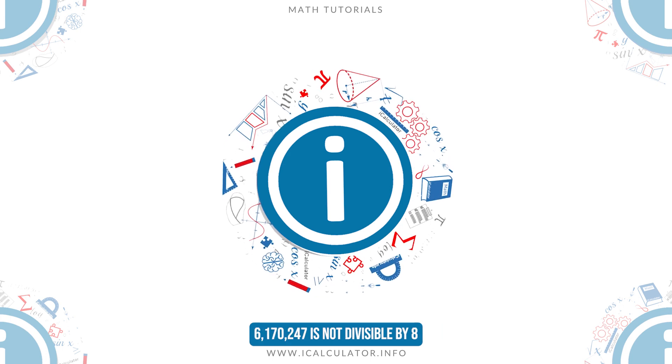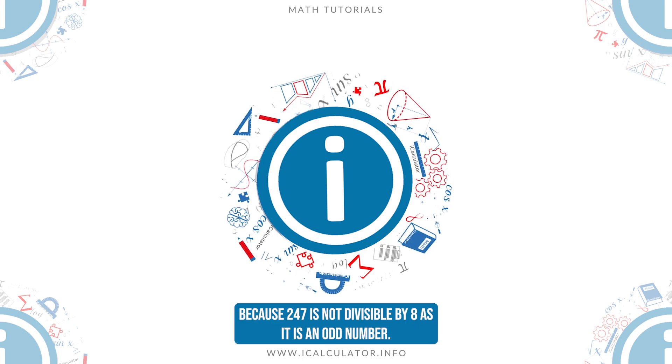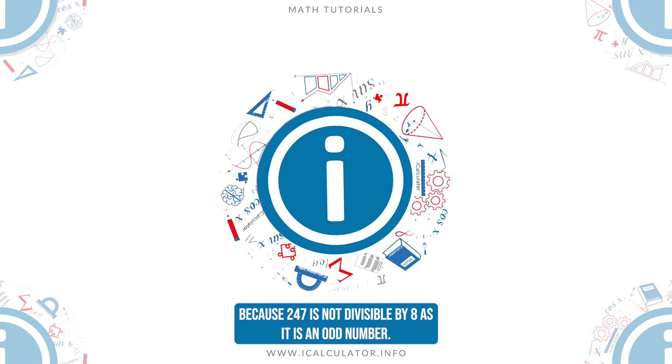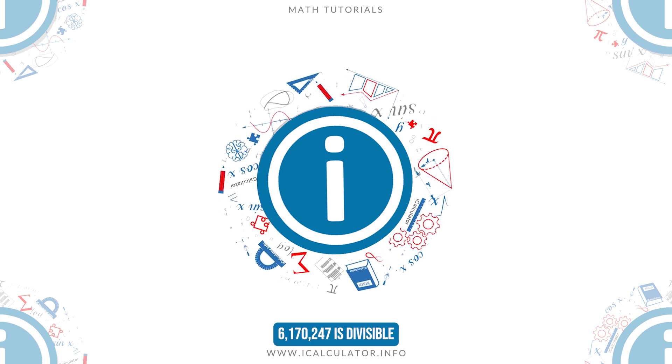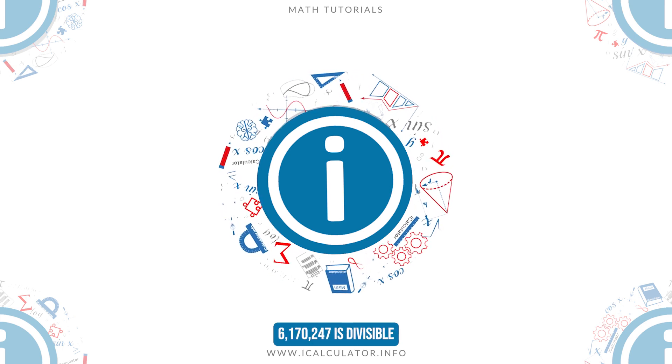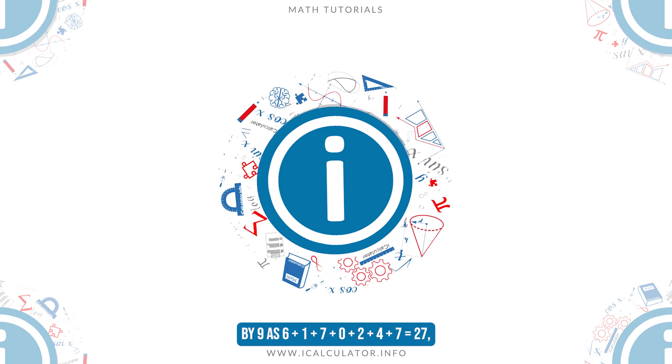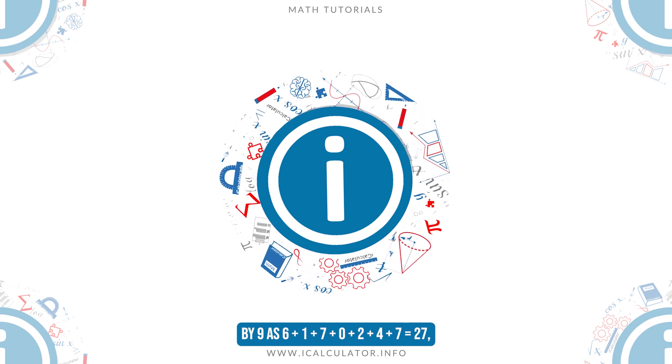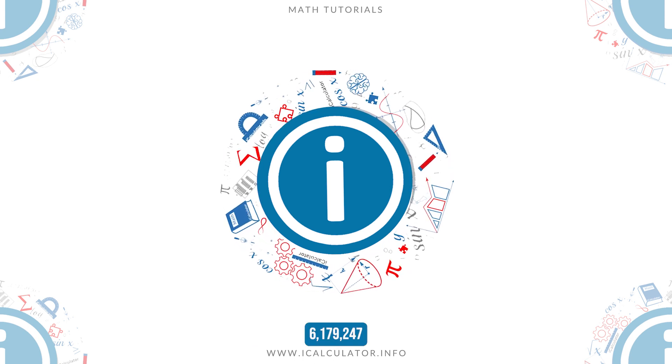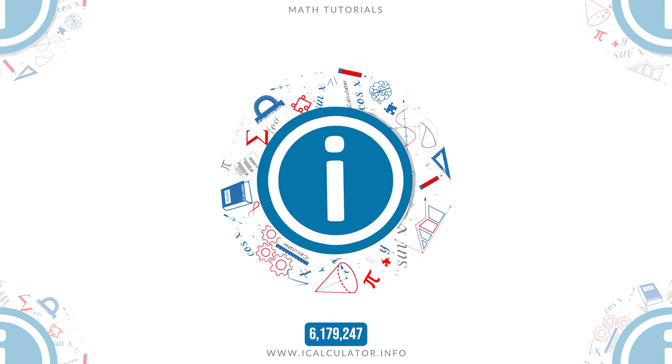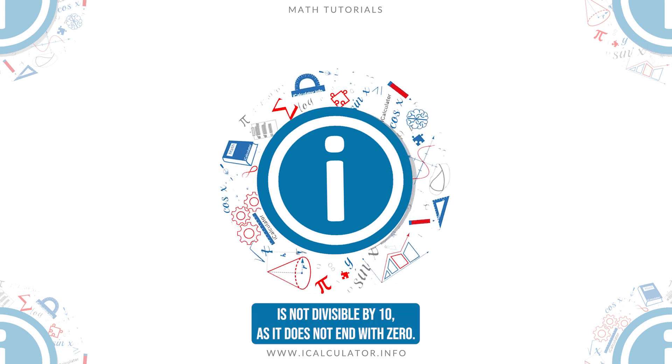6,170,247 is not divisible by 8 because 247 is not divisible by 8 as it is an odd number. 6,170,247 is divisible by 9 as 6 plus 1 plus 7 plus 0 plus 2 plus 4 plus 7 is equal to 27, which is a number divisible by 9. 6,179,247 is not divisible by 10 as it does not end with 0.